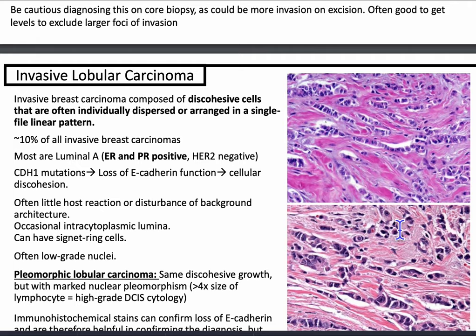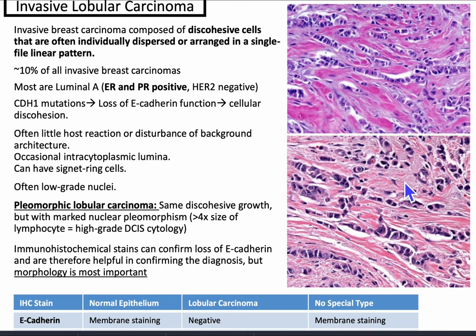Invasive lobular carcinoma is composed of discohesive cells that are often individually dispersed or arranged in a single-file linear pattern. It accounts for 10% of all invasive breast carcinomas; most are luminal A, which are ER and PR positive, HER2 negative. It's driven by a CDH1 mutation, leading to loss of E-cadherin function and cellular discohesion. There is often little host reaction or disturbance of background architecture — my staff tells me these are very sneaky. There are occasional intracytoplasmic lumina, signet ring cells, and often low-grade nuclei.